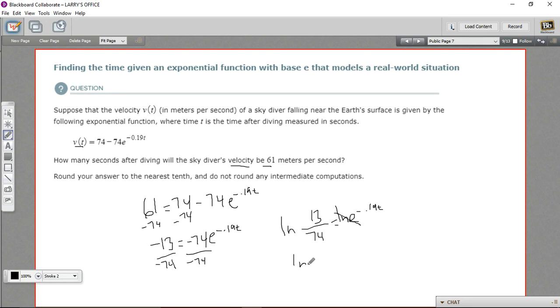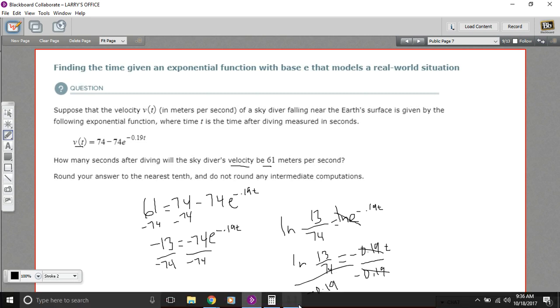So the ln of 13 over 74 equals negative 0.19 t. So what we really need to do to solve for t is just calculate this expression and divide it by negative 0.19. That looks a little complicated, but we can do all of that on the calculator. Let's see how that goes.